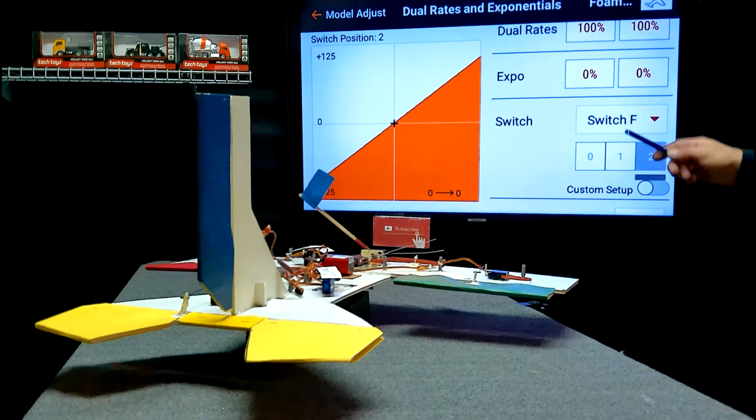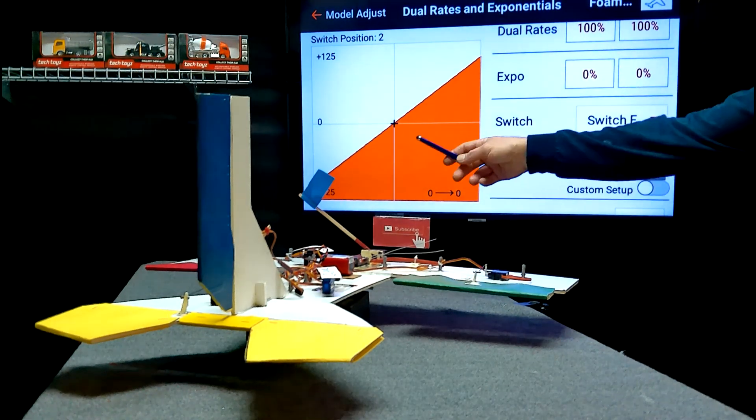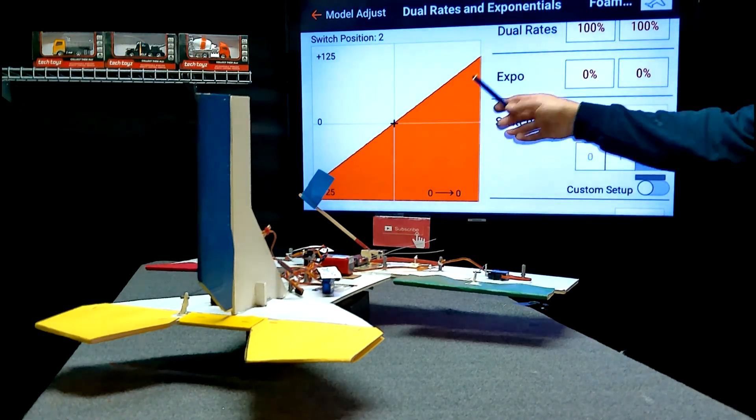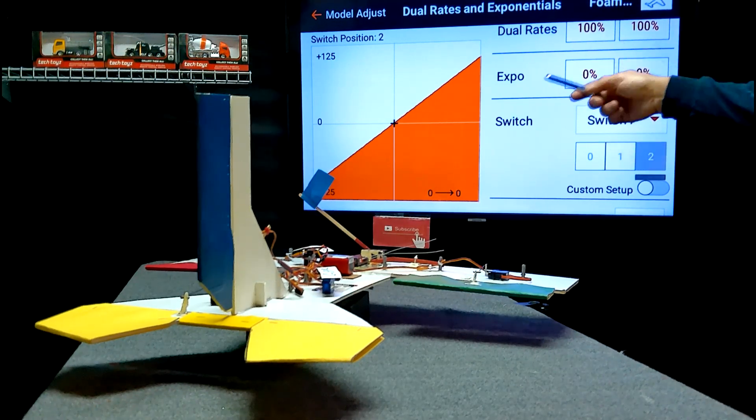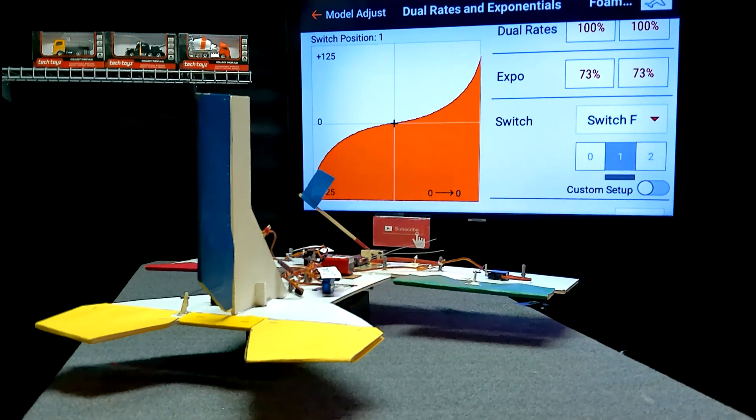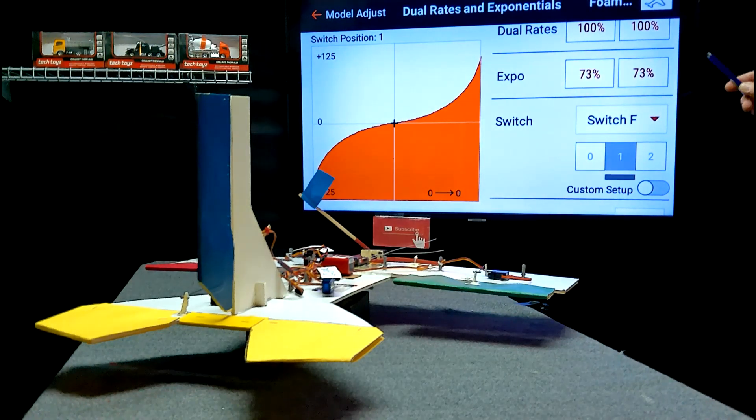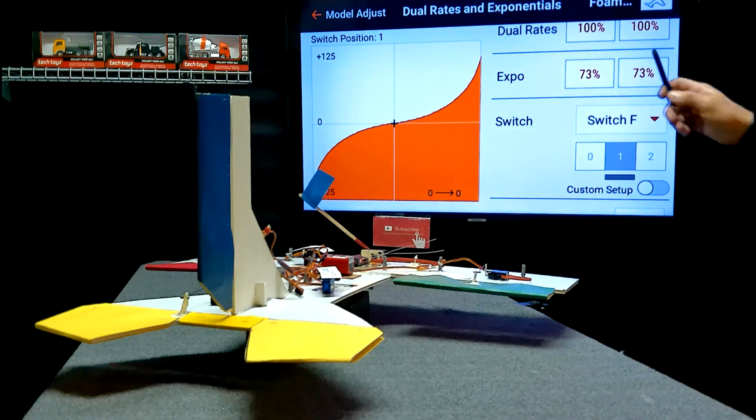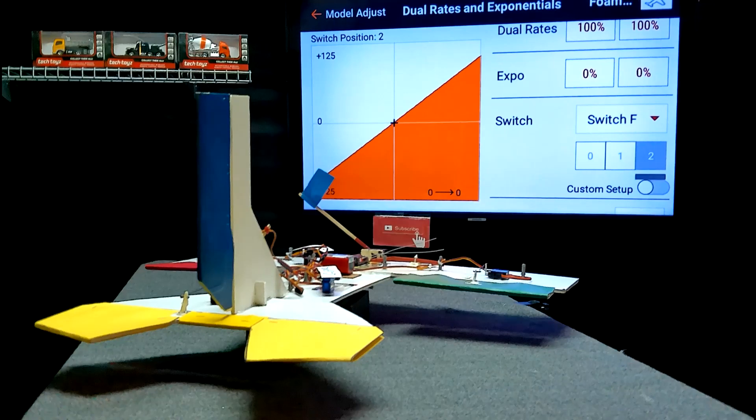Back to our setting with no Expo, you can see on the chart or the graph there that there's a straight line. That just represents how the stick and your servo is going to move. As you move your stick, it's just going to climb right up how it's supposed to. In our setting with the 73% Expo, you can see the line is kind of wavy. So the stick is going to gradually make the servo get to where it needs to go. So let's see it in action. That's the best way.